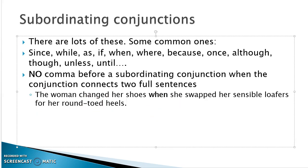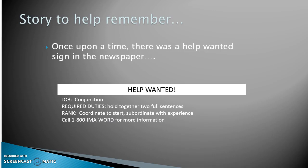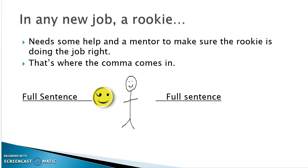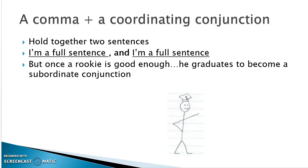To help remember this, here's an analogy. Imagine a help-wanted sign: the job is 'conjunction,' and the job of a conjunction is to hold together two full sentences. When you apply and are new, you're a rookie who needs someone to supervise. In this case, that's the comma — watching to make sure the rookie is doing the job of holding together a full sentence and a full sentence. So: 'I'm a full sentence, [coordinating conjunction] I'm a full sentence.'